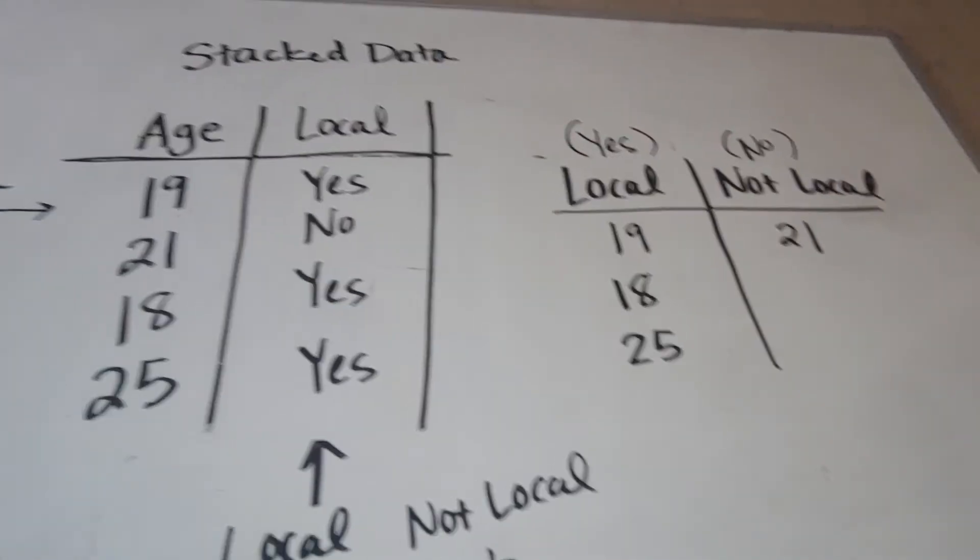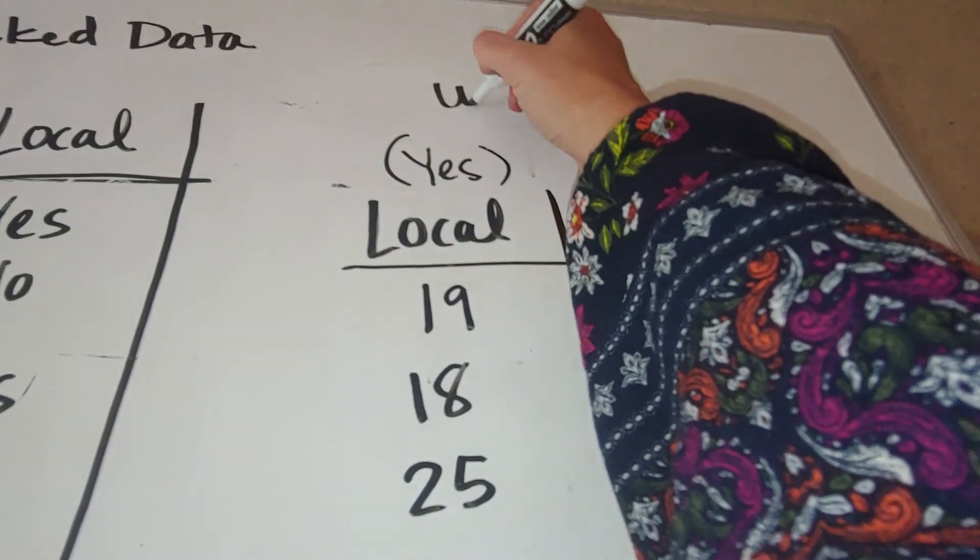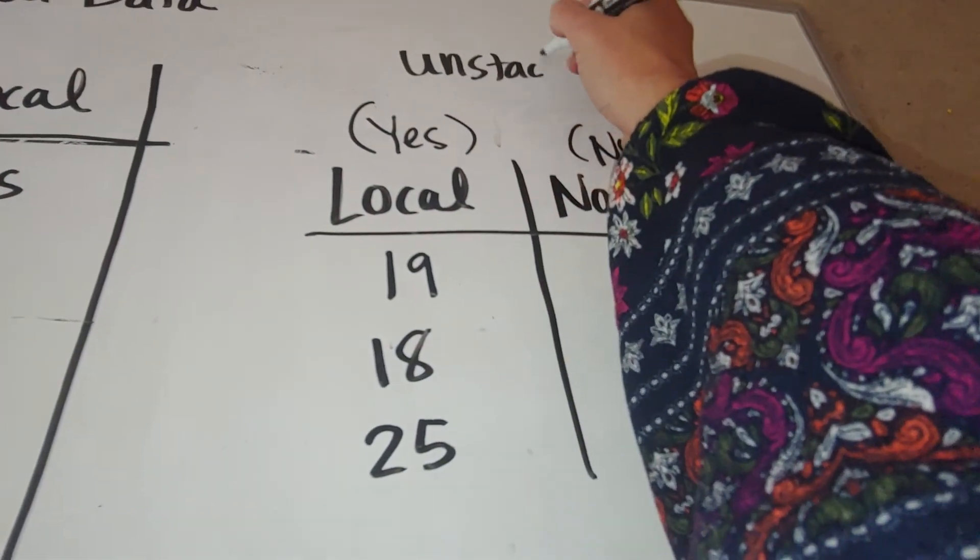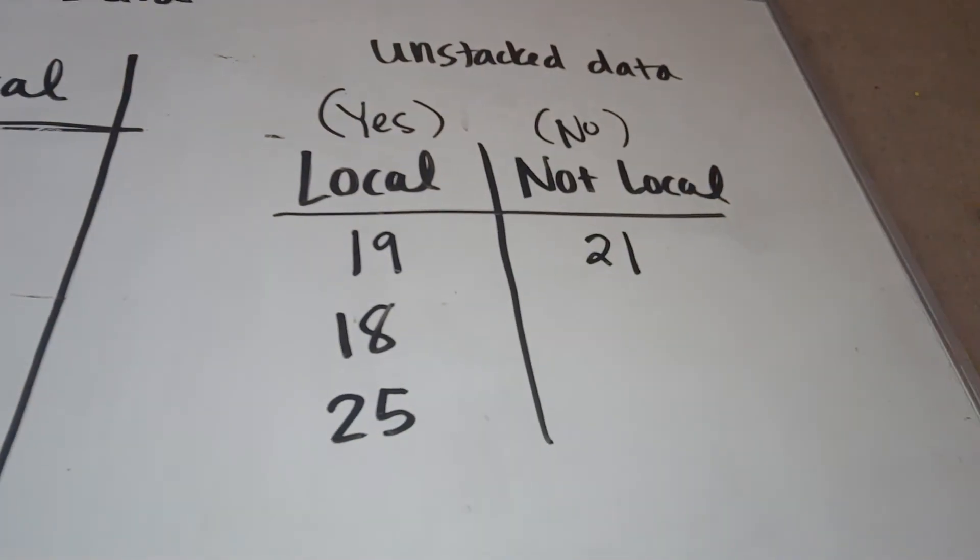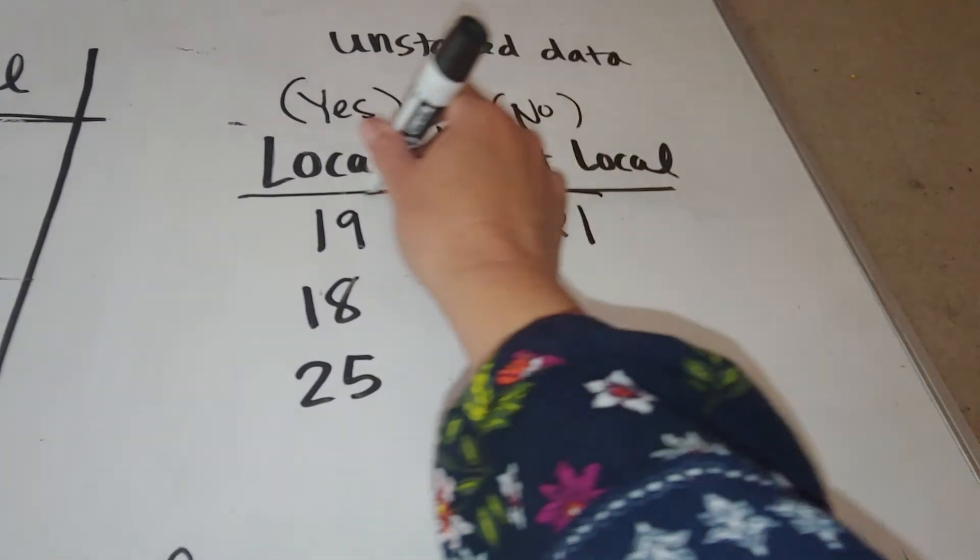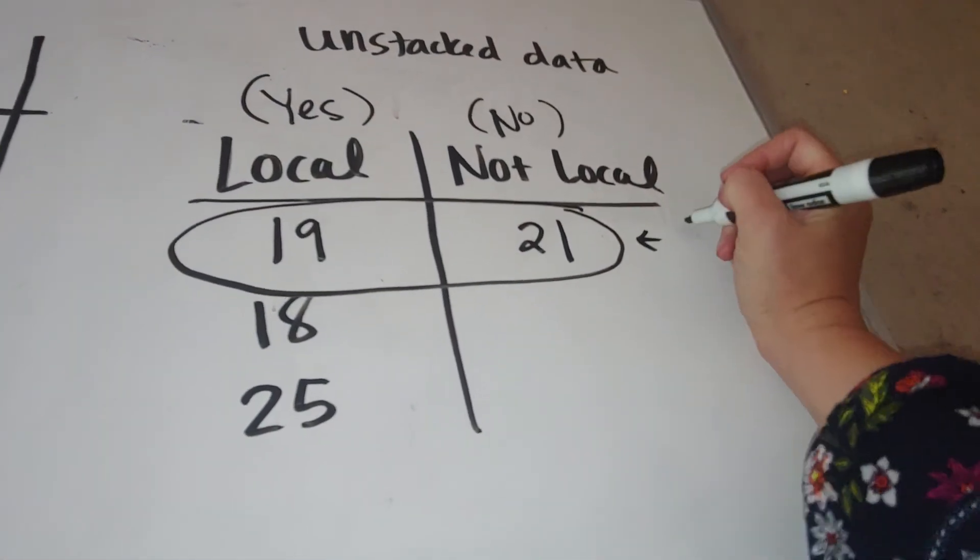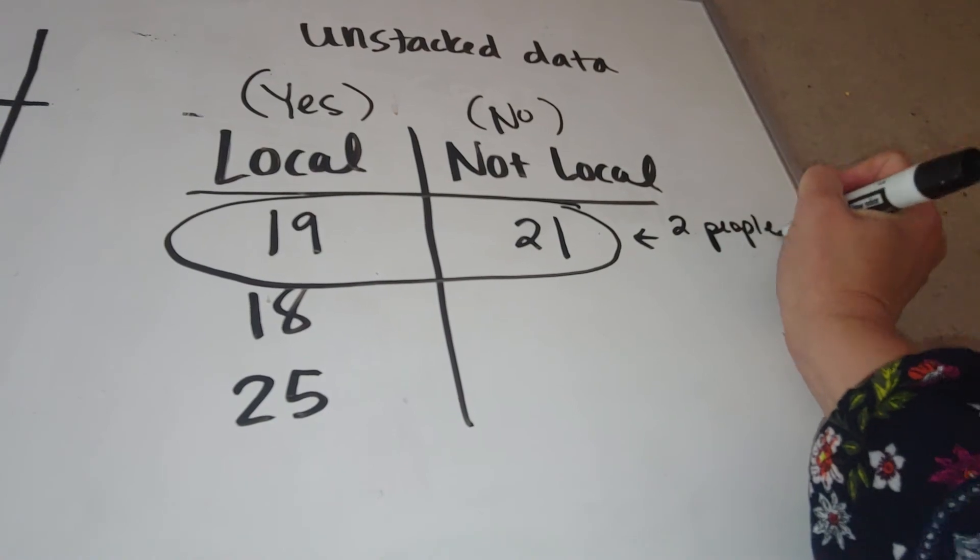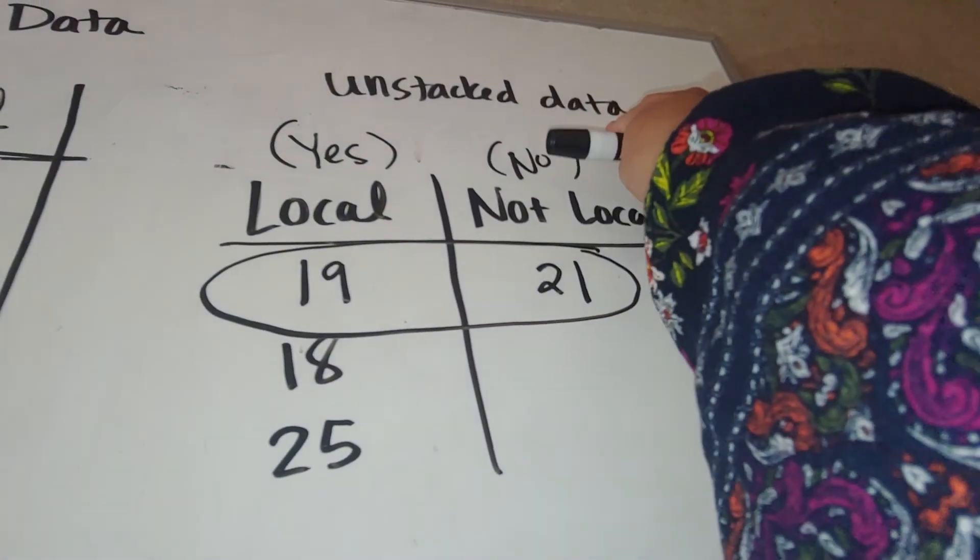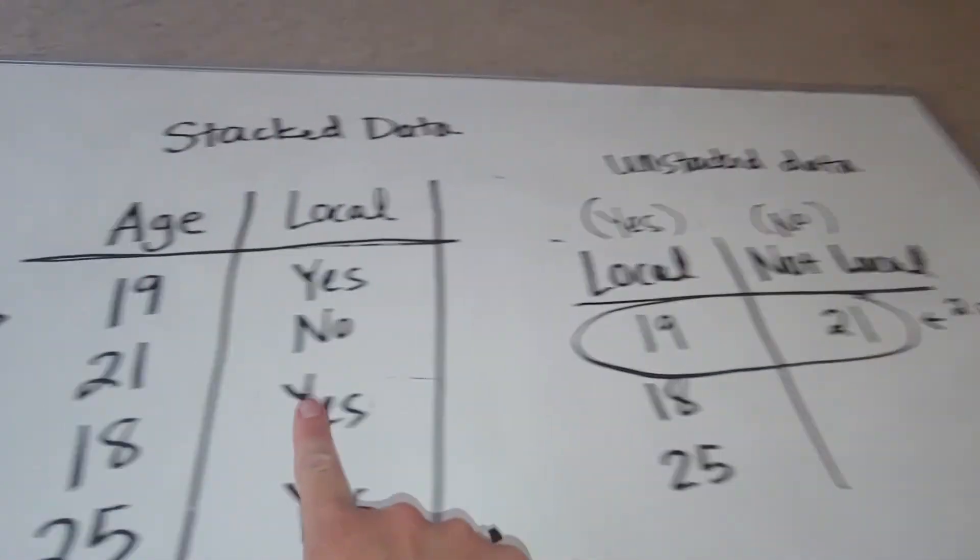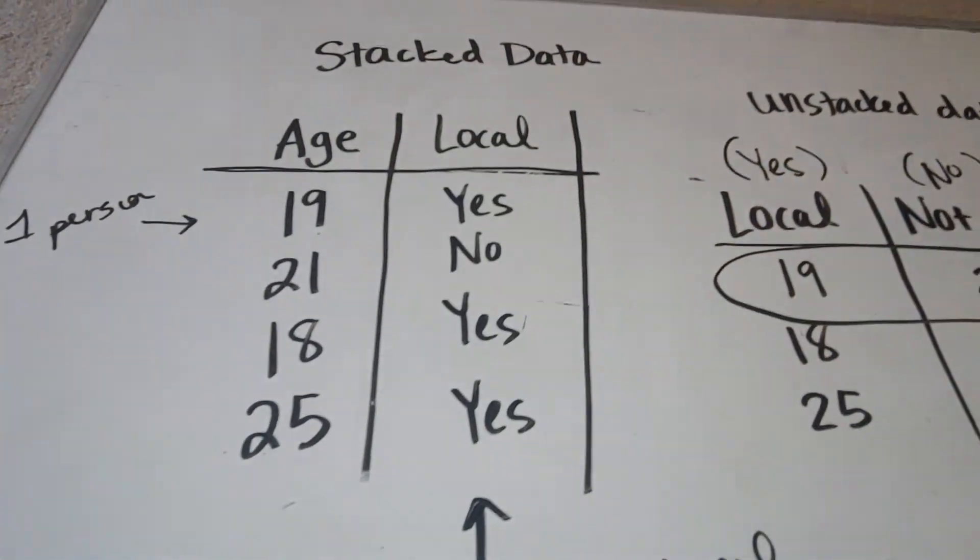So this is stacked data, whereas this is unstacked data. Now, the easiest way to tell if you have stacked data or unstacked data is to look at a row. Here, notice that this row is representing two people. If a row represents more than one person, then that means it's unstacked data, versus if each row just represents one person, then it's stacked data.